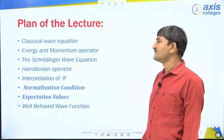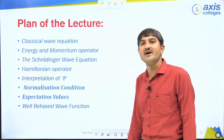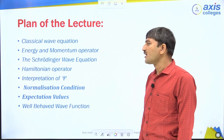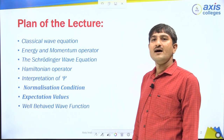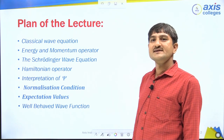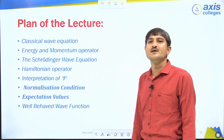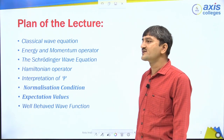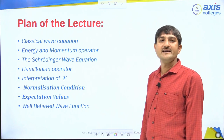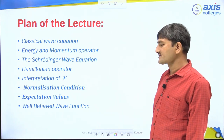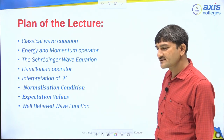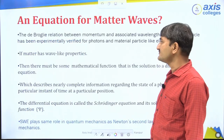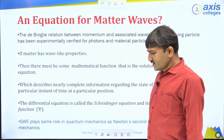After that, we will discuss the Schrödinger wave equation for a free particle, then the Hamiltonian operator. After that, we will discuss what is the wave function, its interpretation, the normalization condition, and how to find the expectation value of the wave function. Then we will discuss the properties of the wave function.